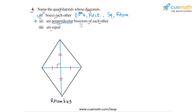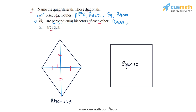Quadrilaterals in which the diagonals are perpendicular bisectors of each other are rhombuses. There is also a special type of rhombus — squares. Because any square is also a rhombus, a square will also be a quadrilateral in which the diagonals are perpendicular bisectors of each other. So we can add squares as the answer for part two as well.